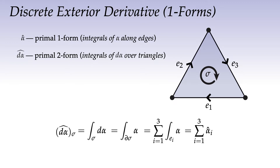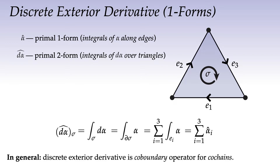Even if α does all sorts of crazy stuff inside σ, it doesn't matter — we have exactly the information needed to evaluate the integral of the derivative. The discrete exterior derivative is nothing more than the co-boundary operator applied to co-chains. The key perspective is that the derivative is obtained by integrating over the boundary.